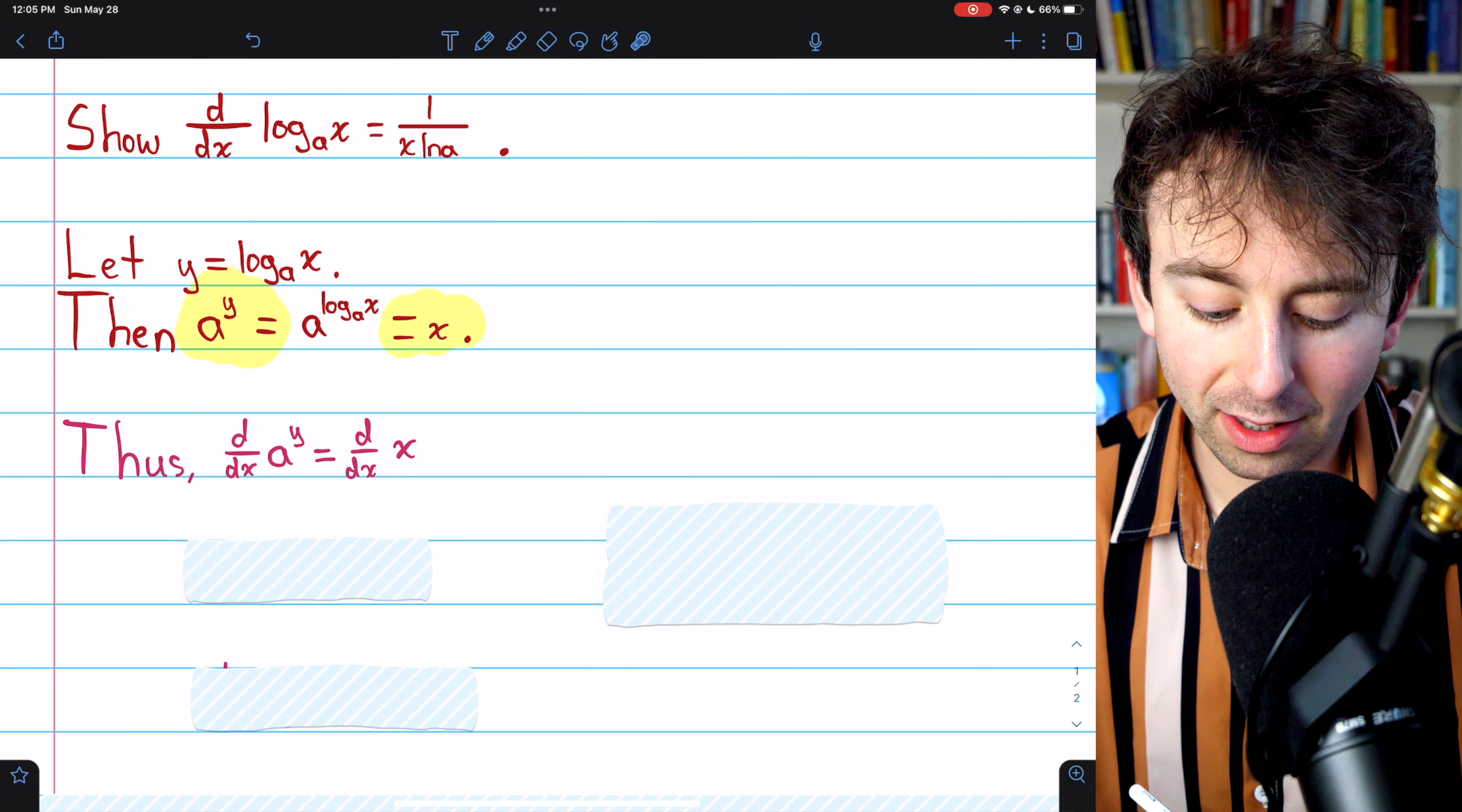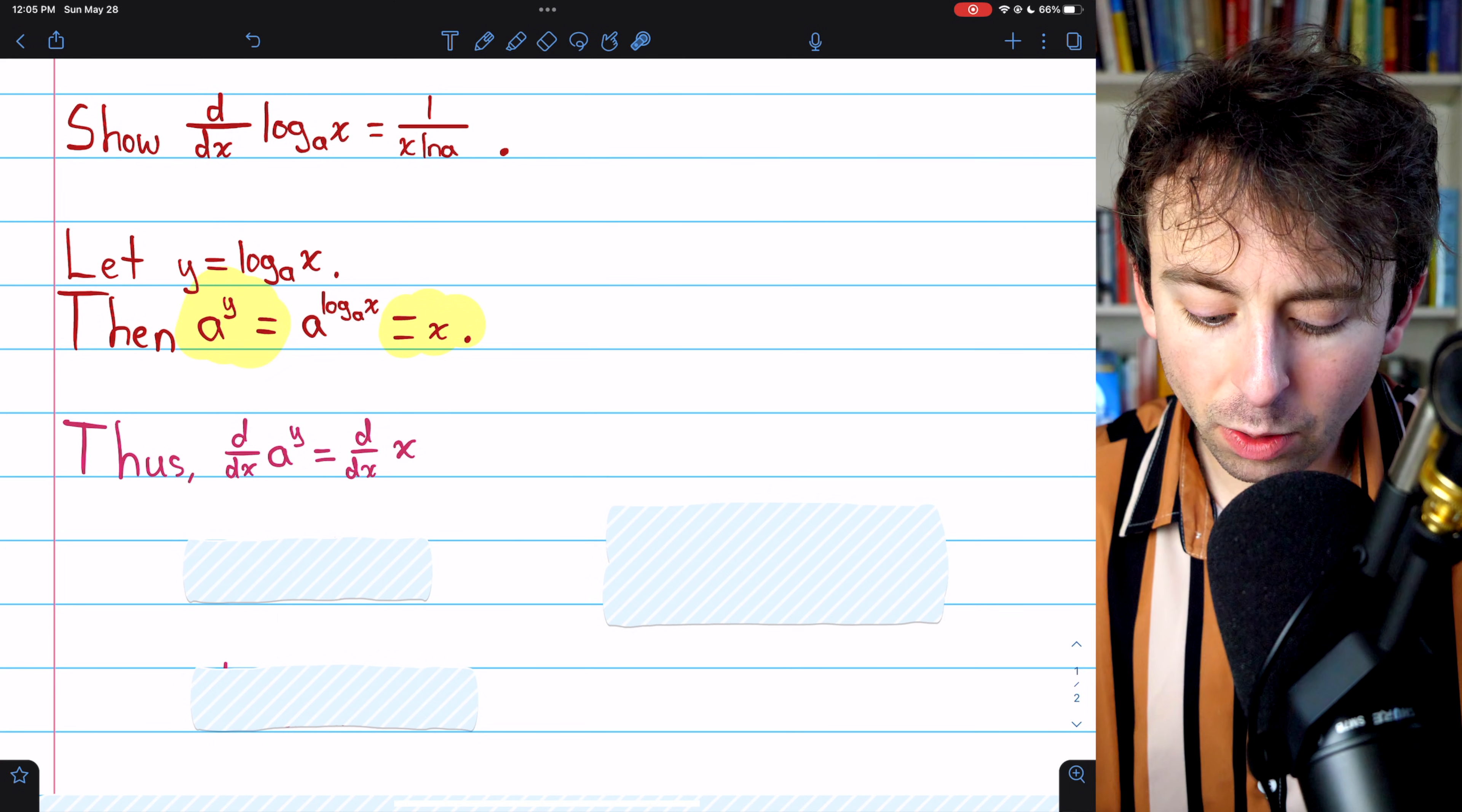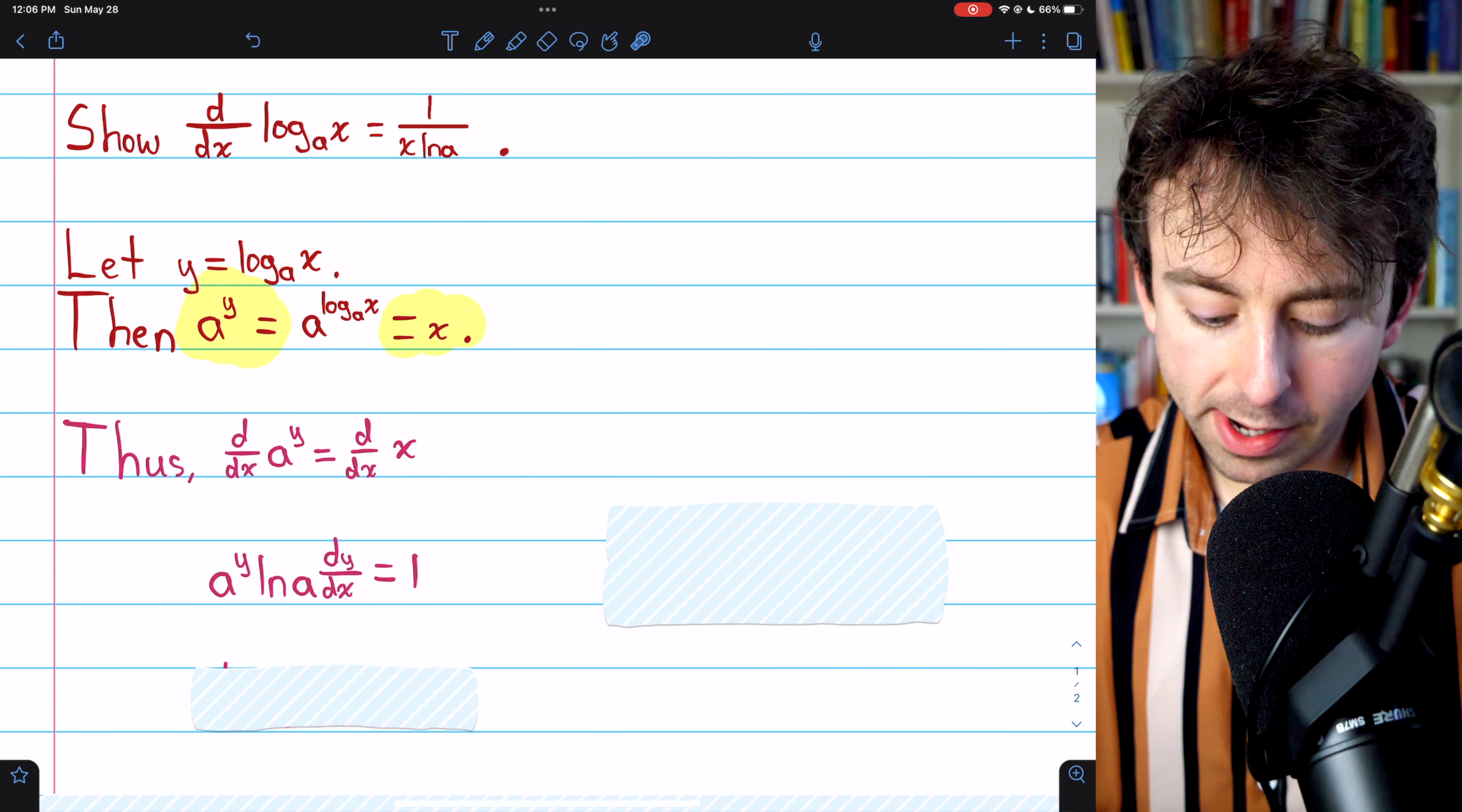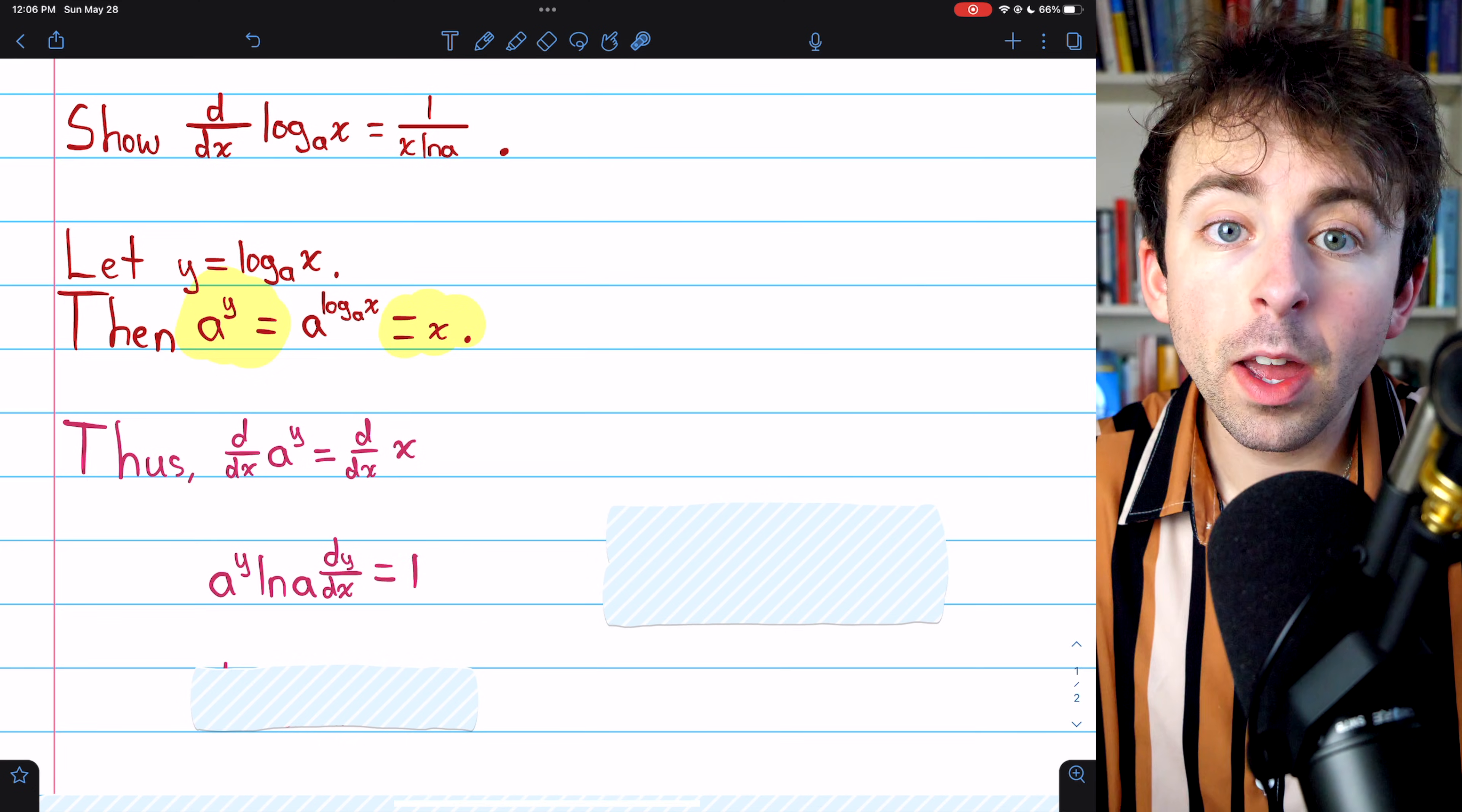So differentiating both sides of the equation, we've got the derivative of a to the y on the left equals the derivative of x on the right. Now we're using implicit differentiation. On the right, of course, the derivative of x with respect to x is just 1.